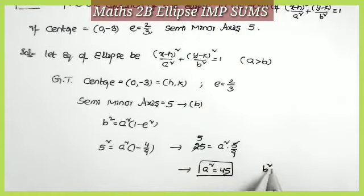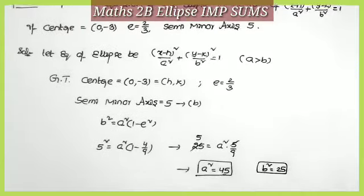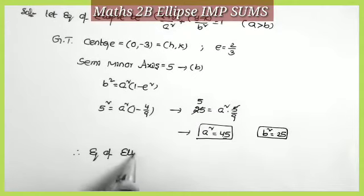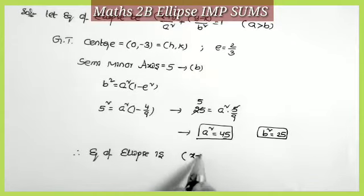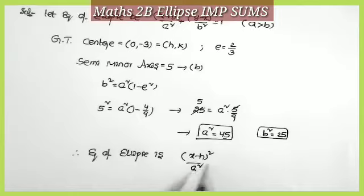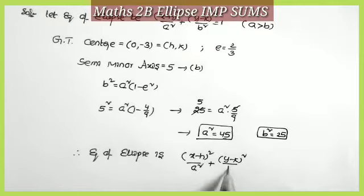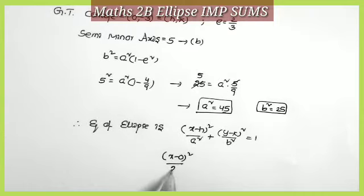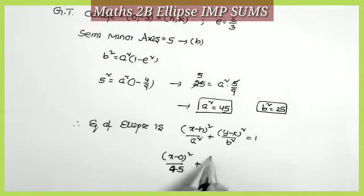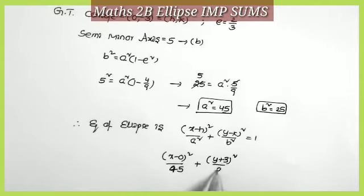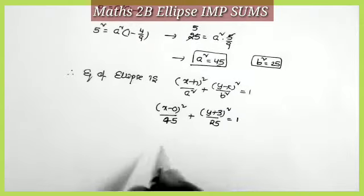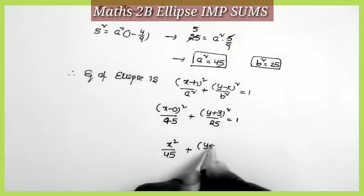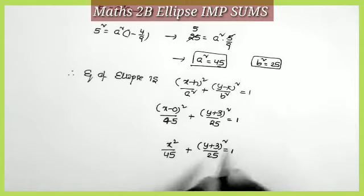The value of a² = 45. Since b = 5, b² = 25. Substituting into the ellipse equation: (x−h)²/a² + (y−k)²/b² = 1. With h = 0, k = −3, a² = 45, b² = 25, this becomes x²/45 + (y+3)²/25 = 1.